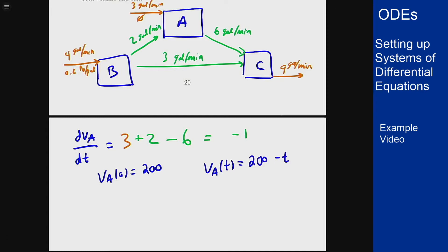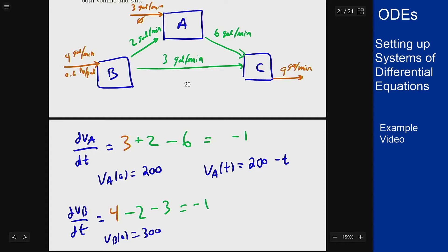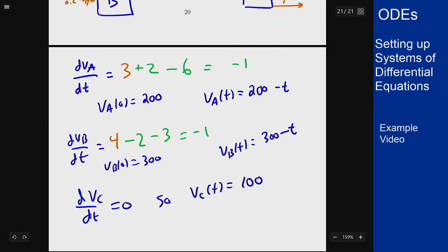For tank B, the inflow rate is four, and the outflow rates are two going to A and three going to C, which also gives a net rate of minus one. Since that volume started at 300 gallons, V_B(t) = 300 − t. For tank C, six and three flow in while nine flows out, so the volume is constant — V_C is always 100 gallons. We'll need these volumes as we factor in salt concentration.